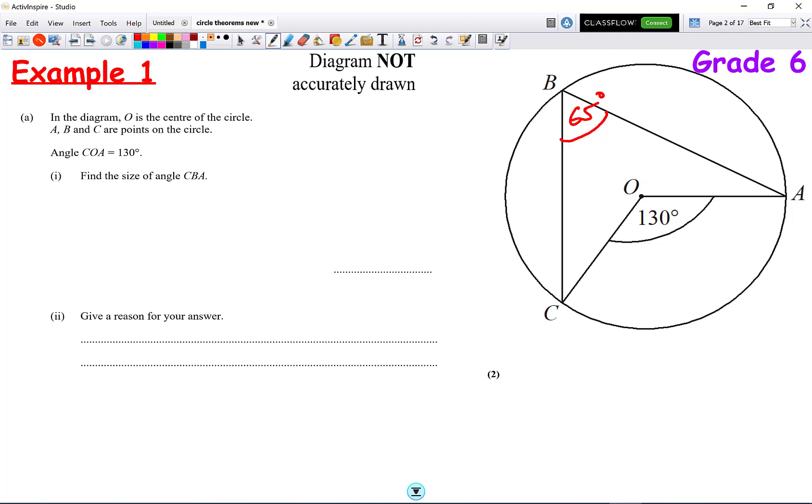Now the question says find the size of angle CBA. That's CBA, the angle here. So, we've found that already. It's 65 degrees.